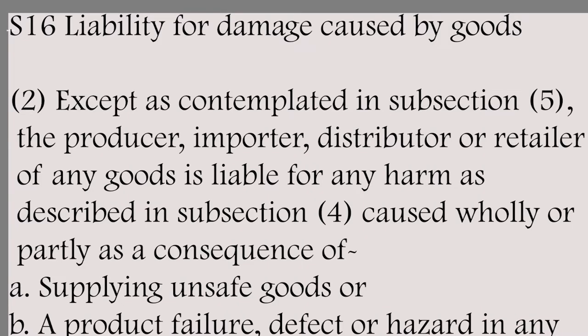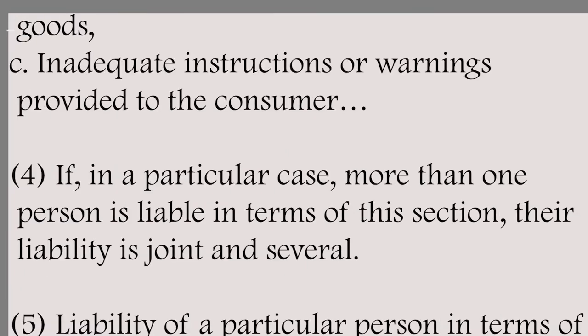Now let's look at Section 16: Liability for damage caused by goods, Subsection 2. Except as contemplated in Subsection 5, the producer, importer, distributor, or retailer of any goods is liable for any harm caused wholly or partly as a consequence of: A — supplying unsafe goods; B — a product failure, defect, or hazard in any goods; C — inadequate instructions or warnings provided to the consumer. Where more than one person is liable, their liability is joint and several.